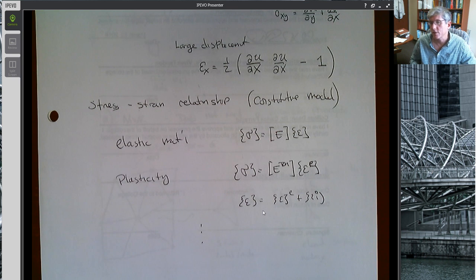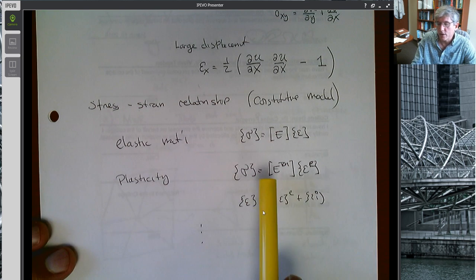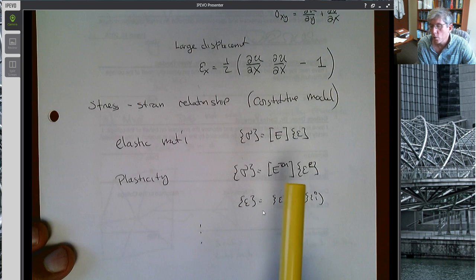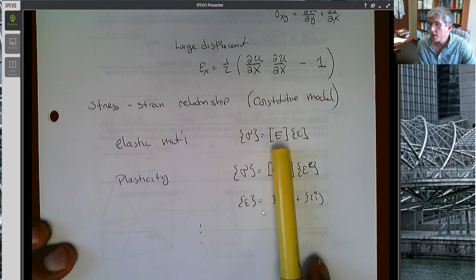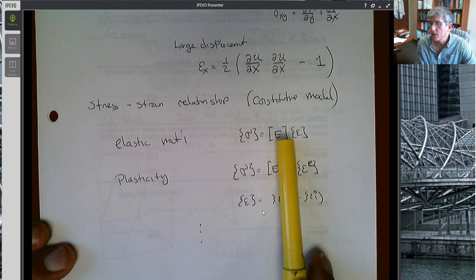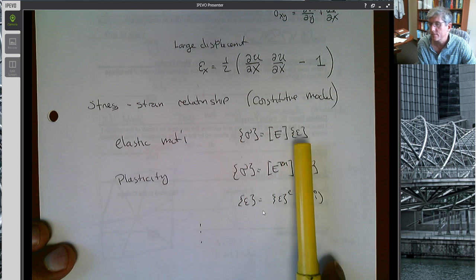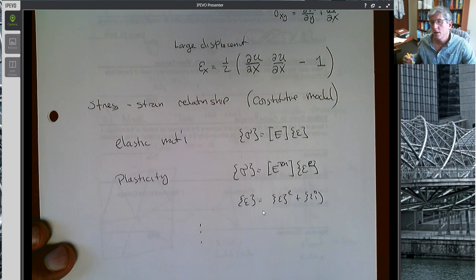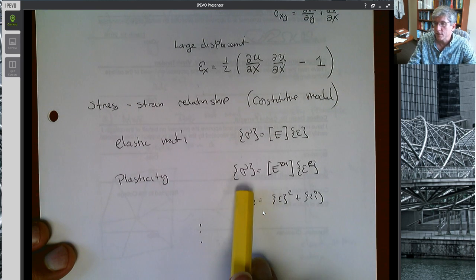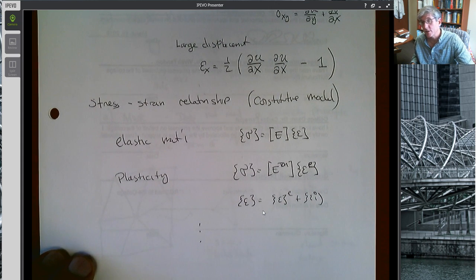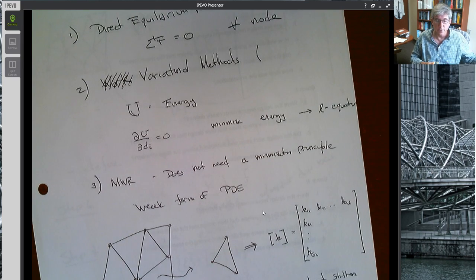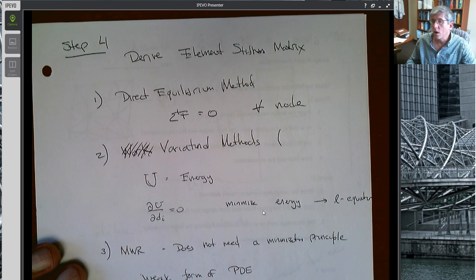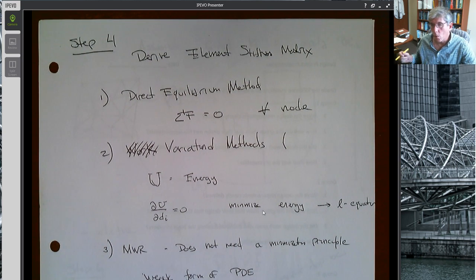If you do have large displacements, you might have to use something like an Euler or Green-Lagrange strain type of thing. This is another way of measuring the strain. If you linearize this, it degenerates down to the small displacement ones, but it's valid for large displacement. That's outside the scope of the book but it's an assumption. For the most part we're going to be using these as our strain-displacement relationships. The second bit is to figure out what is the stress-strain relationship, the constitutive model. Do we have elasticity, plasticity, is it viscoelastic?